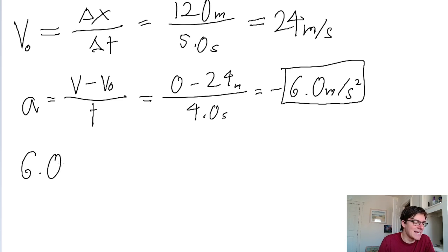all we got to do is take the acceleration we found and divide it by the gravitational acceleration. So that's 1g for 9.8 meters per second squared.